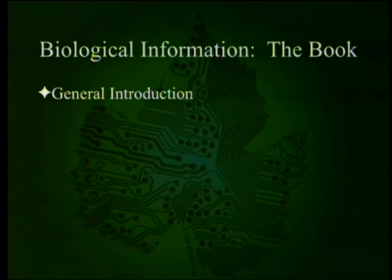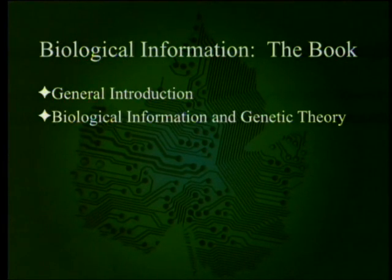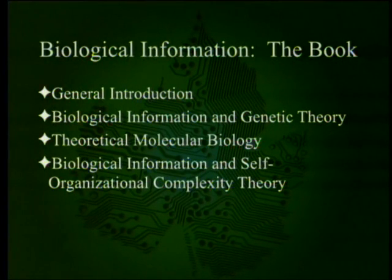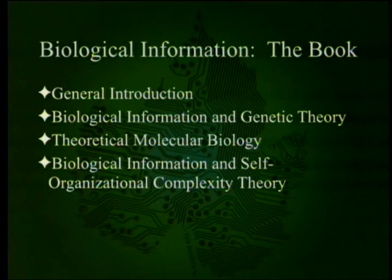The book is divided into a general introduction and then three major parts: biological information and genetic theory, theoretical molecular biology, and biological information and self-organizational complexity theory. It has people who are atheists on it — this is not a theological book. But it is a book by people who feel that the mathematics just won't work for standard neo-Darwinian random variations and natural selection.